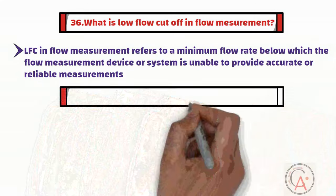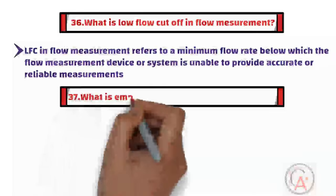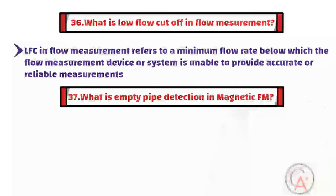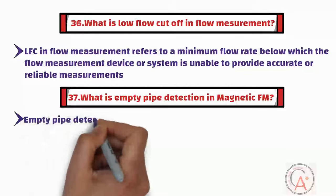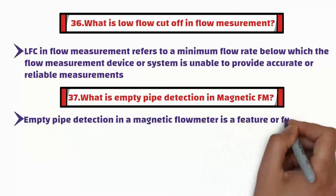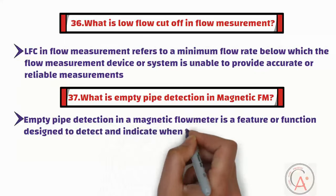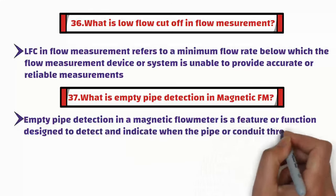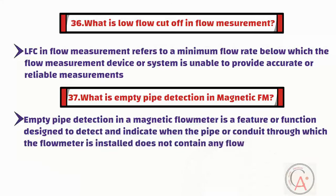The thirty-seventh question is: what is empty pipe detection in a magnetic flow meter? Empty pipe detection in a magnetic flow meter is a feature designed to detect and indicate when the pipe or conduit through which the flow meter is installed does not contain any flow — that is, it is empty.